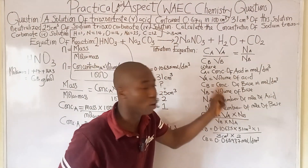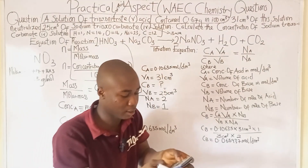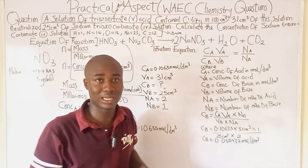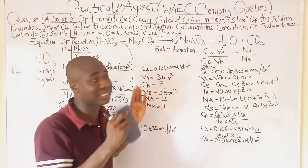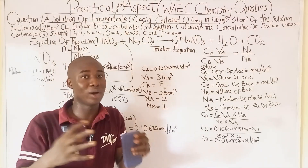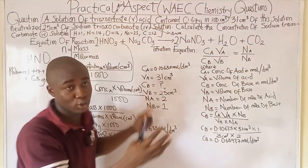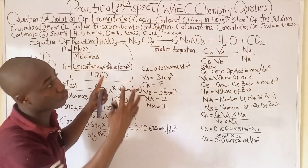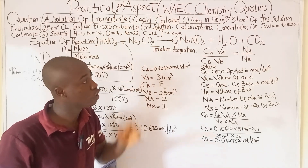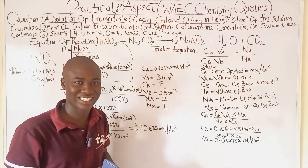The answer is in moles per dm³ because that is what the titration formula gives. In other video lessons coming soon, I'll cover cases where concentration is expressed in grams per dm³. If you find this lesson helpful, click the subscribe button and share with your friends. If you find any aspect difficult, put it in the comment section and I'll provide video lessons for those areas. Thanks for watching.